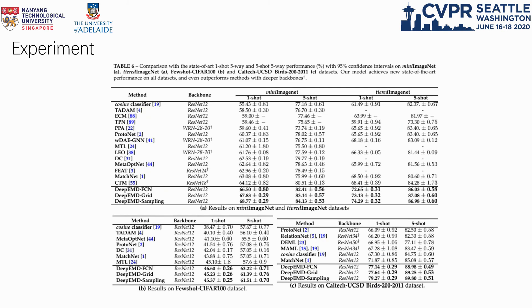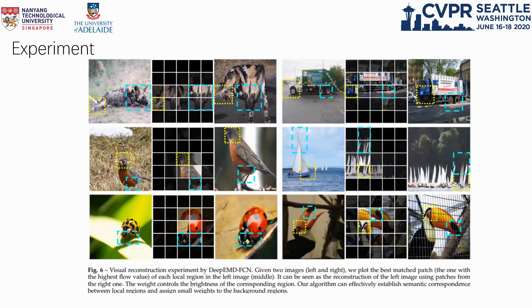We conduct extensive experiments on multiple datasets to demonstrate the effectiveness of our algorithm. Experiments on four popular few-shot classification benchmarks show that our algorithm on both one-shot and five-shot classification tasks significantly outperforms the baselines and state-of-the-art methods. We also provide visualization experiments to observe the matching flows. Since we have the correspondence information between the regions in two images, we can reconstruct one image with the local patches from the other one.